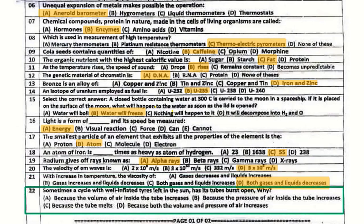Question number 22: Sometimes a cycle with well-inflated tires left in the sun has its tubes burst open. Why? The correct answer is because both the volume and pressure of air increase, causing the tube to burst.